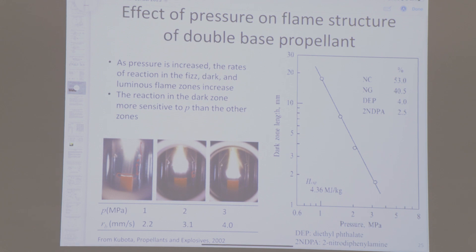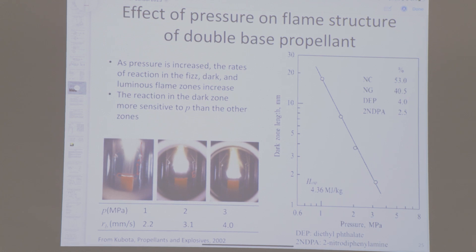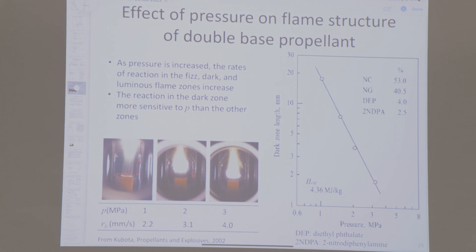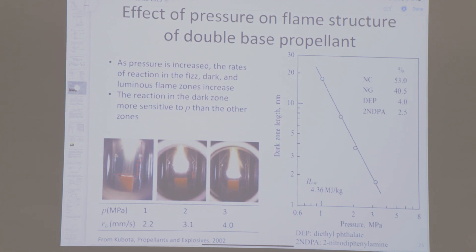The second stage moves closer and closer to the first stage with increasing pressure. At high enough pressure, that second stage will land right on the surface. This affects the temperature gradient at the surface, which is what feeds energy into the condensed phase and controls the reaction rate. A plot on the right shows the dark zone length as a function of pressure — increasing pressure decreases that dark zone length.